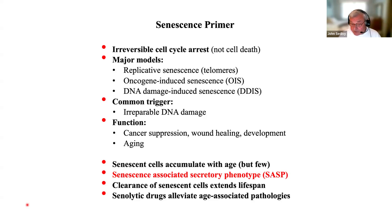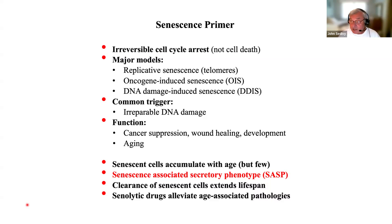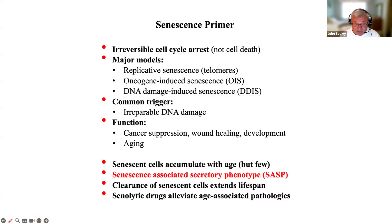Senescent cells accumulate in essentially all tissues, but to very small numbers. This threw us off for quite a while — how could so few cells be harmful? Then Judith Campisi discovered the senescence-associated secretory phenotype. Senescent cells secrete many bioactive molecules, in particular pro-inflammatory cytokines, chemokines, matrix remodeling enzymes, etc. Senescence is really a gain-of-function phenotype at the organismal level, and it is through the SASP that the deleterious effects are manifested on the tissue. Several experiments have now shown that clearance of senescent cells extends lifespan and that senolytic drugs alleviate age-associated pathologies.